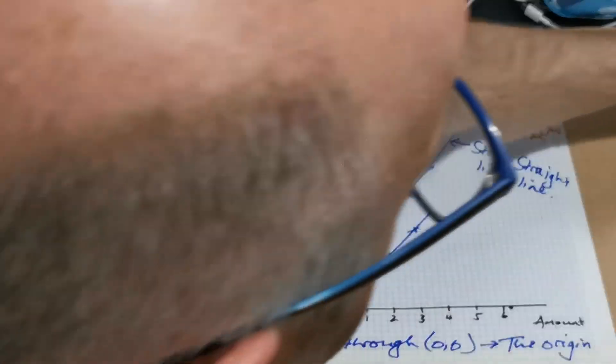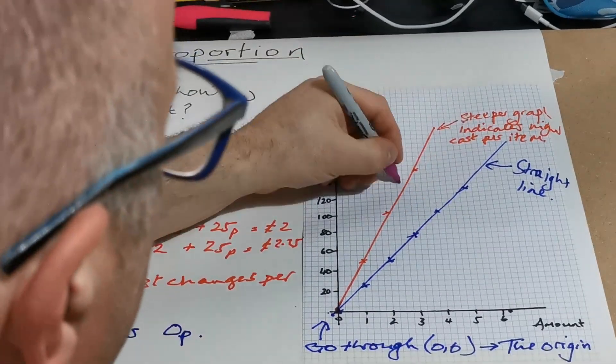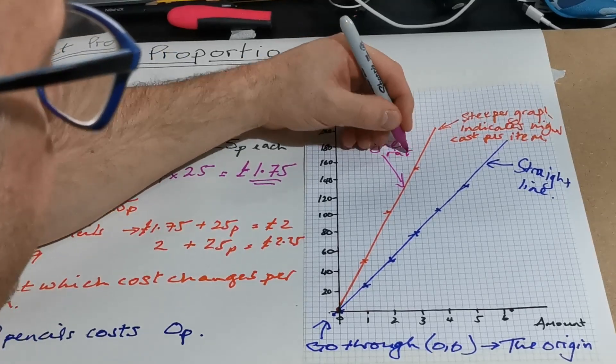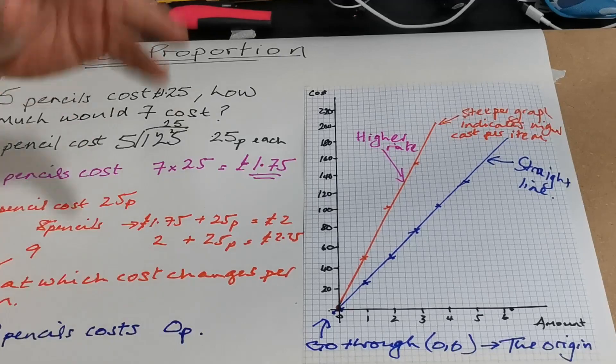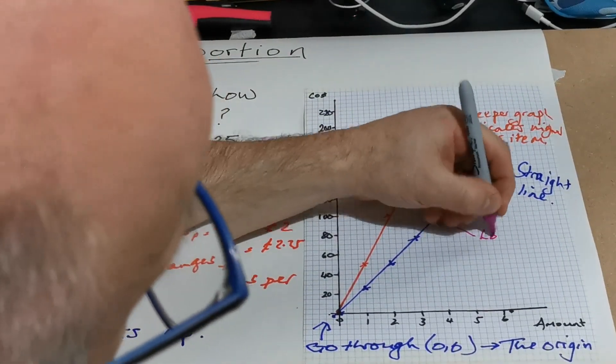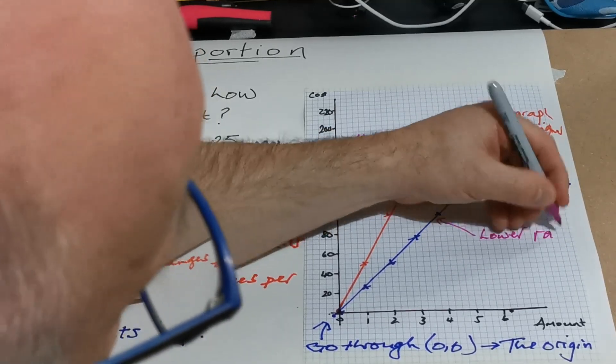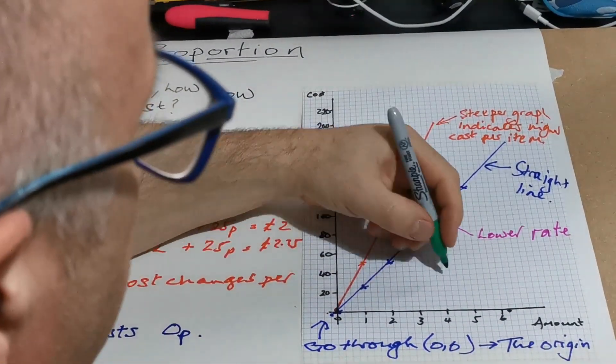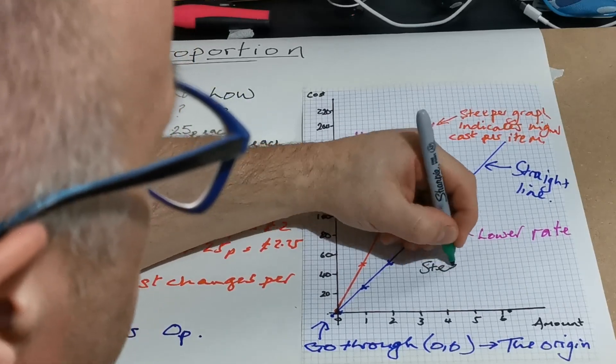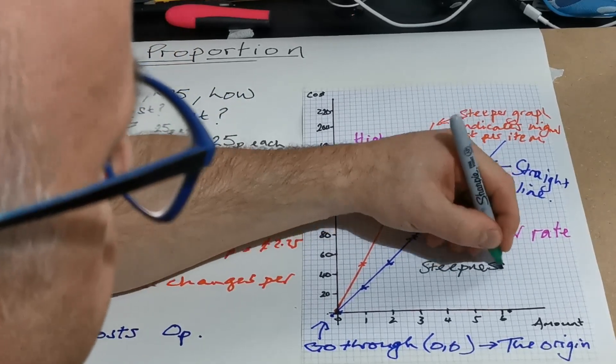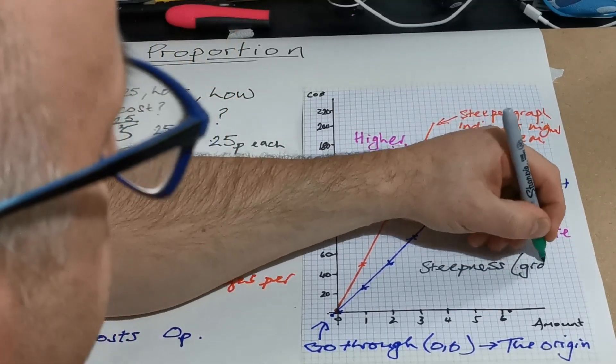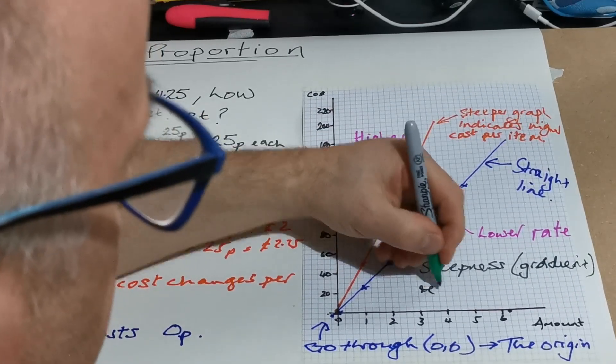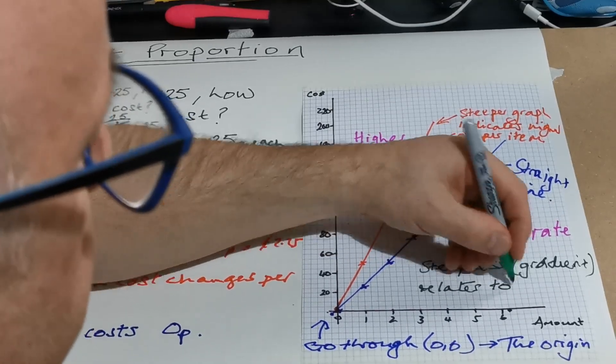So in many cases, we would think that this would be a higher rate of change. So the change in cost goes up much more steeply on here than it does on there. So the steepness of the graph can relate to cost. So steepness, we have an extra word which we're going to call gradient. That's the proper word for it. Relates to cost.